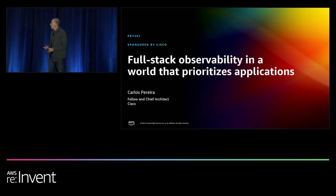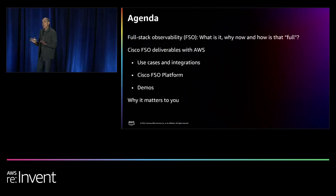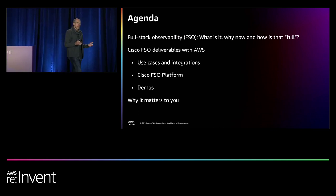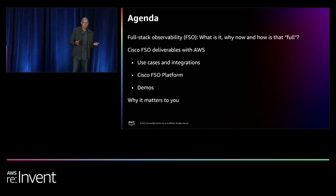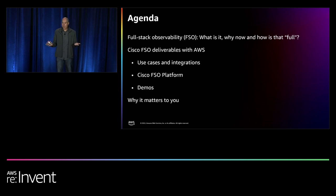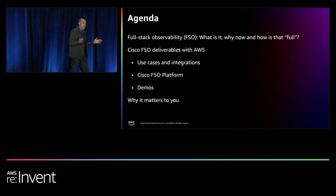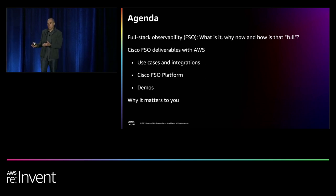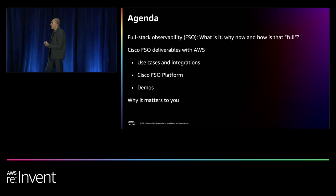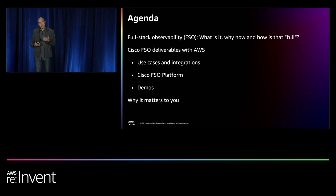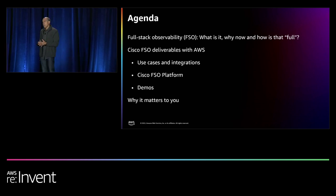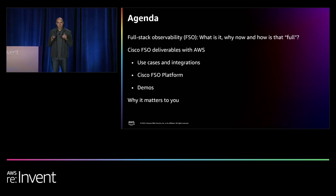Welcome everyone. The agenda for the next hour covers three questions I typically get from audiences and customers as they relate to full stack observability: what is full stack observability, why is it happening now, and what exactly do we mean by full stack? Once we clear those up, we'll move to Cisco's deliverables with AWS, including use cases, integrations, and a teaser of the Cisco FSO platform with demos. So brace yourselves, fasten your seatbelts, and let's get started.